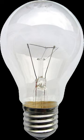The filament is protected from oxidation with a glass or fused quartz bulb that is filled with inert gas or a vacuum. In a halogen lamp, filament evaporation is slowed by a chemical process that redeposits metal vapor onto the filament, thereby extending its life.